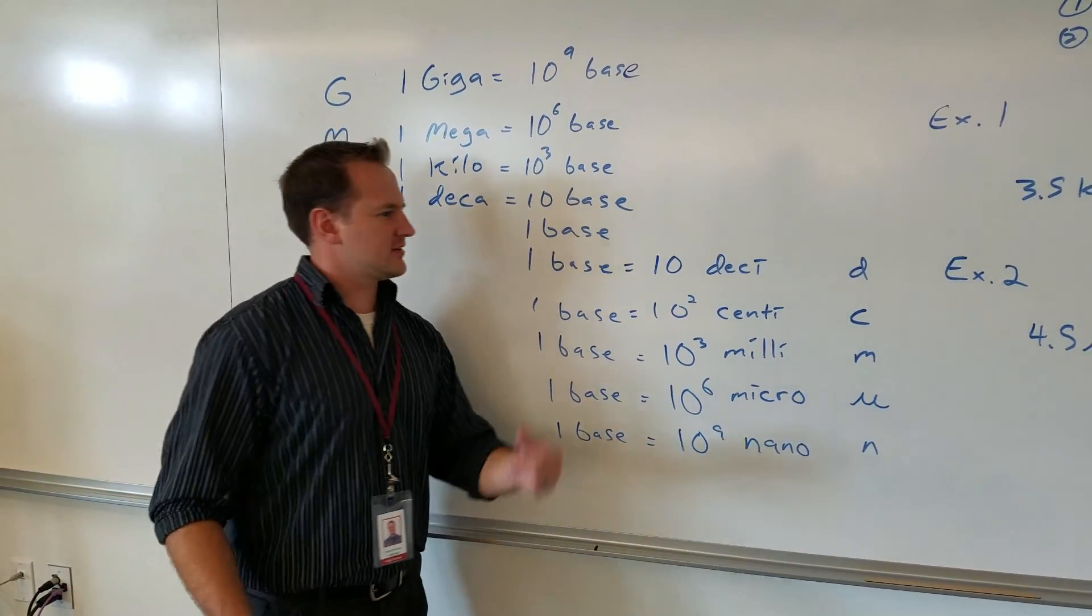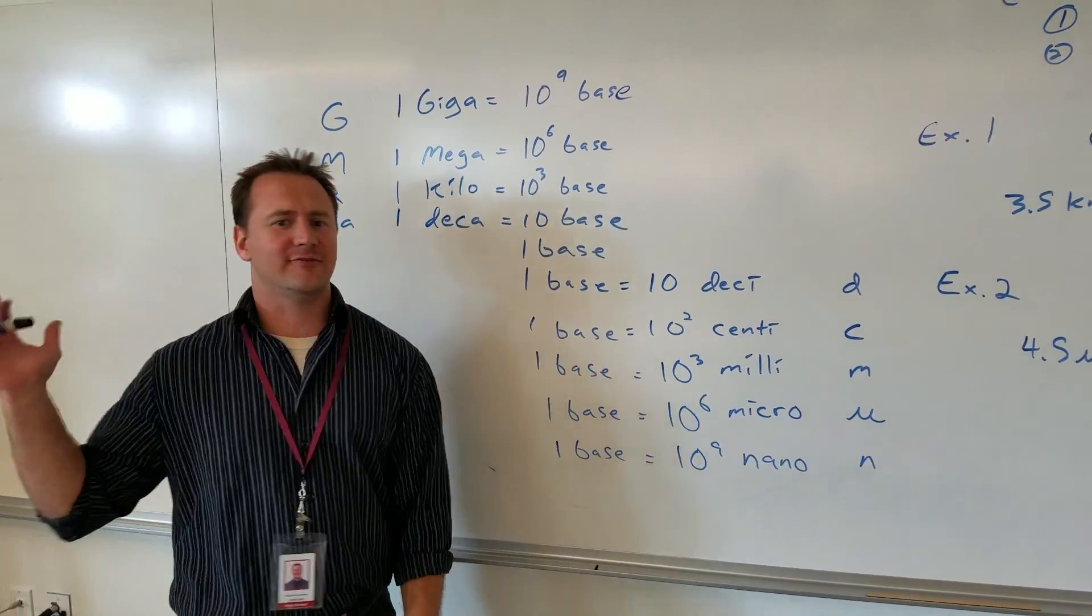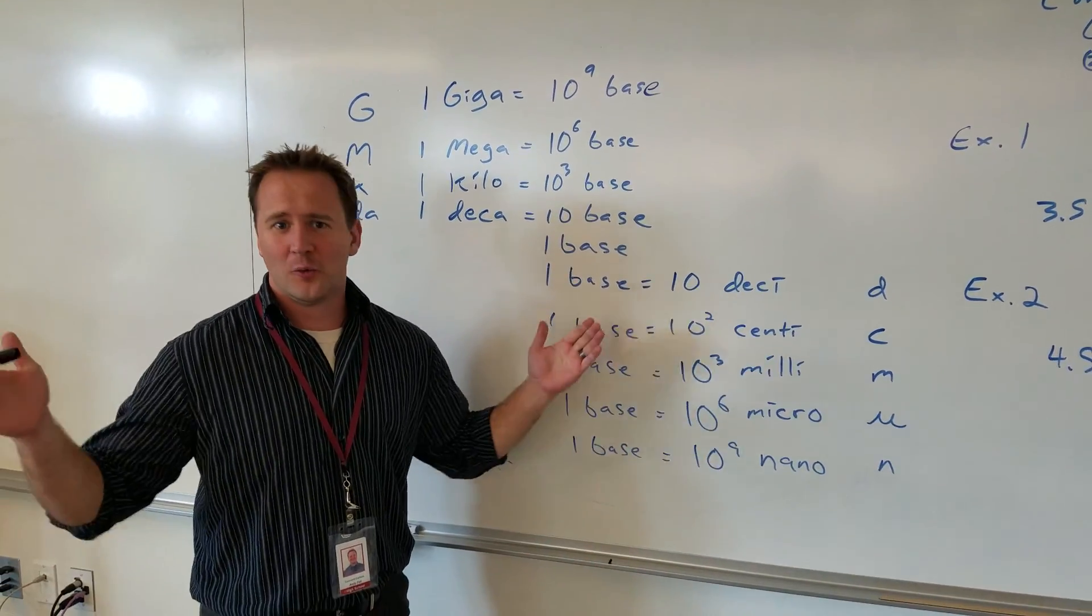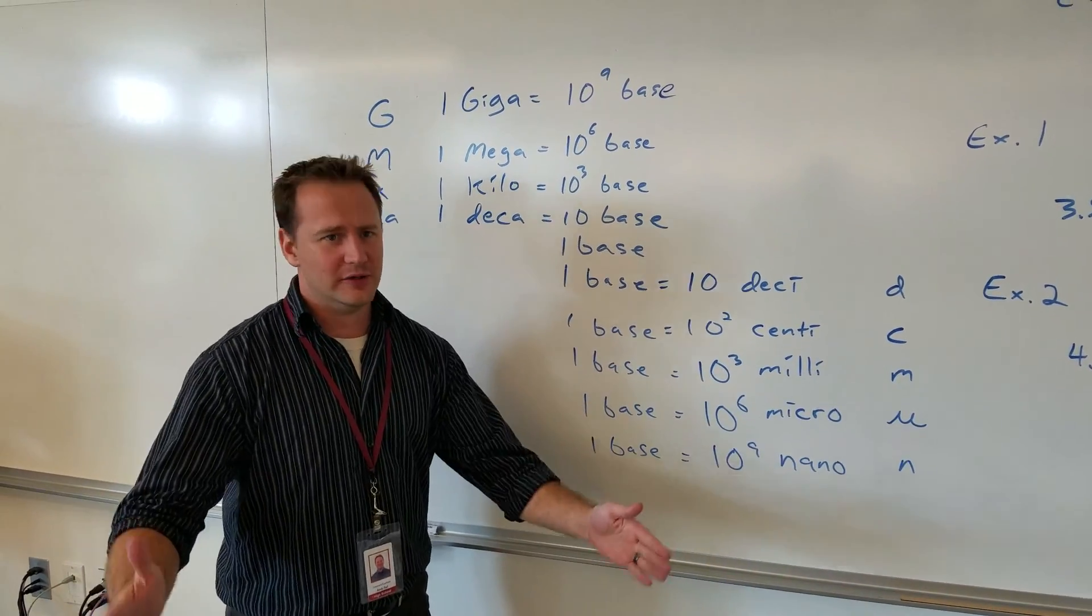We have different units for different things. There's 128 ounces in a gallon, 5,280 feet in a mile, and 12 inches in a foot. Where do these numbers come from? Why do we use them?